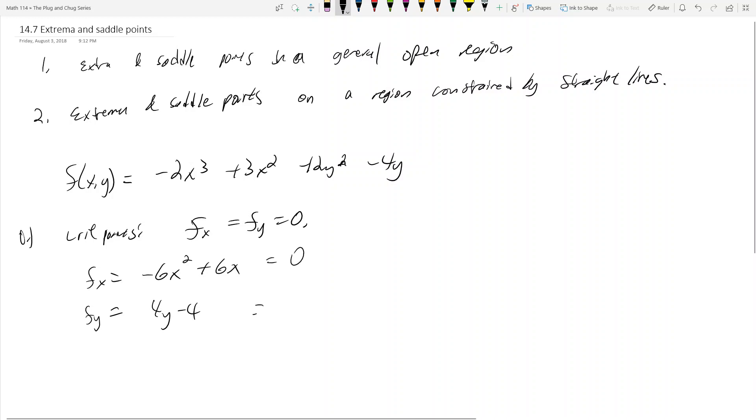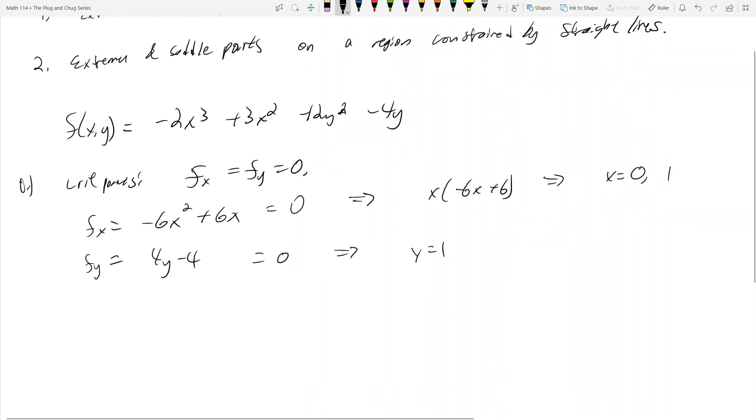So you want that top guy equal to 0, you want the bottom guy equal to 0. And what we get up top is x times negative 6x plus 6. And on the bottom, y equals 1, because that's the only solution to this guy. And then here we see that x can equal 0, or it can equal positive 1.